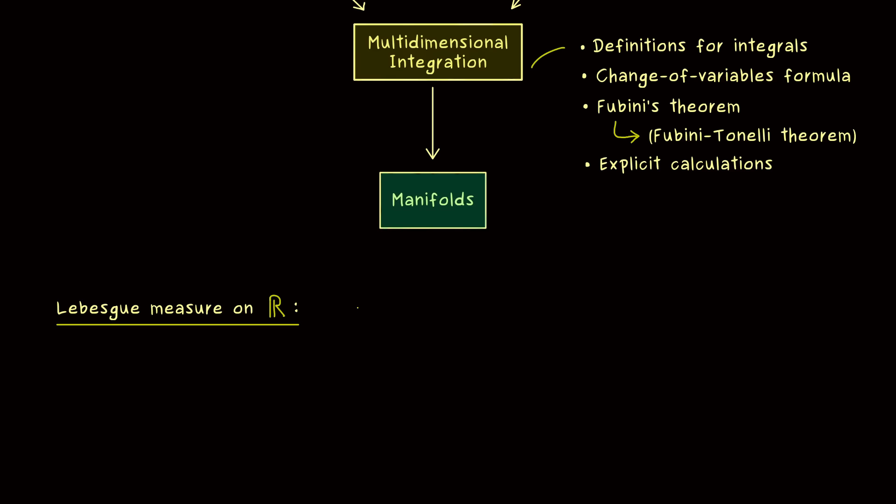Hence, first you have to know how to measure one-dimensional volumes, so lengths. This means a subset on the real number line here should have a well-defined length. So for example, we already know what this means for an interval on the real number line. So if it starts with the point A and ends with the point B on the right, we know that the length is given by B-A.